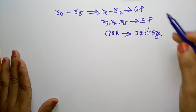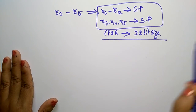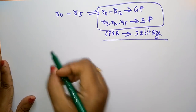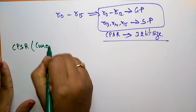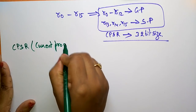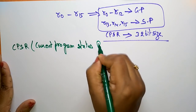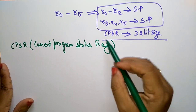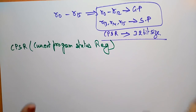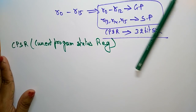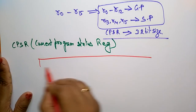In the previous video I explained about these registers. Now let's see what CPSR is. CPSR means Current Program Status Register. This is also one of the special registers. Let's see the structure — CPSR is a 32-bit register.